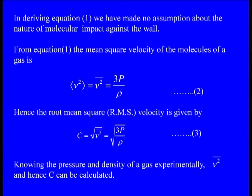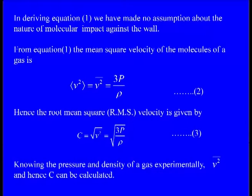The mean square velocity of the molecules from equation one is 3P/rho, where P is the pressure and rho is the density of the gas. Hence, the root mean square velocity is the square root of 3P/rho. If the density is large, the RMS velocity will be small; if the density is very low, the RMS velocity will be very large. Knowing the pressure and density of a gas experimentally, people have calculated the root mean square velocity C.